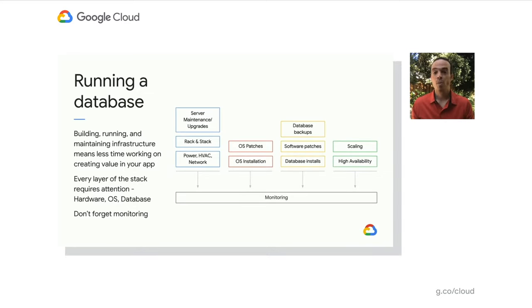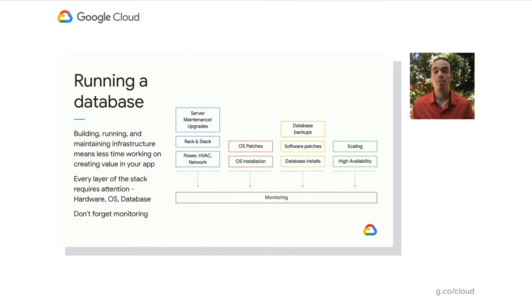On the rightmost column of the slide, we get into high availability, usually using replication and some health checking to perhaps perform automatic failover in the event of an incident or outage. And also scaling — thinking about things like using replication to scale out reads. We wrap this entire technology stack in monitoring so that if there is a problem, we're able to understand where the root cause is.